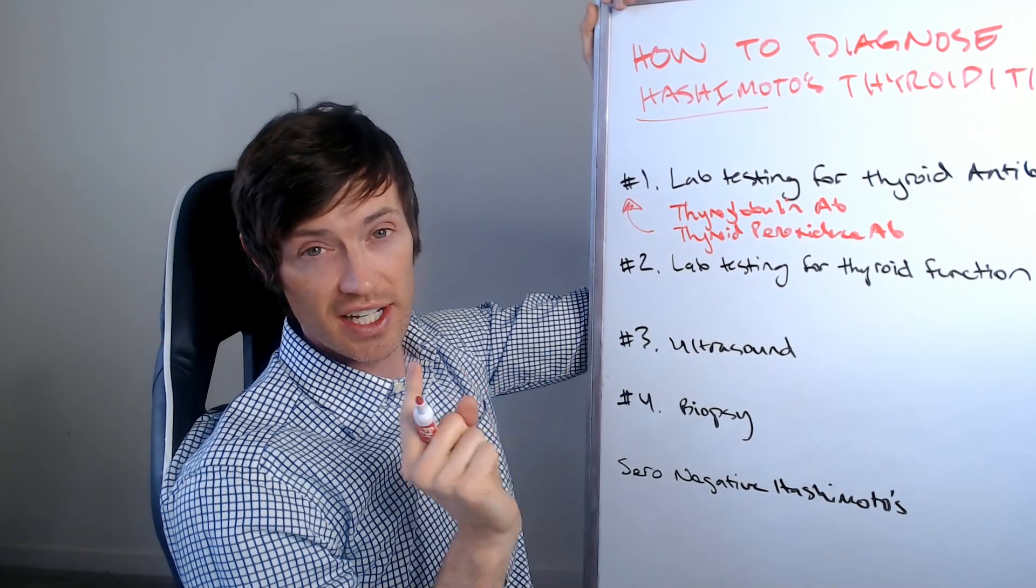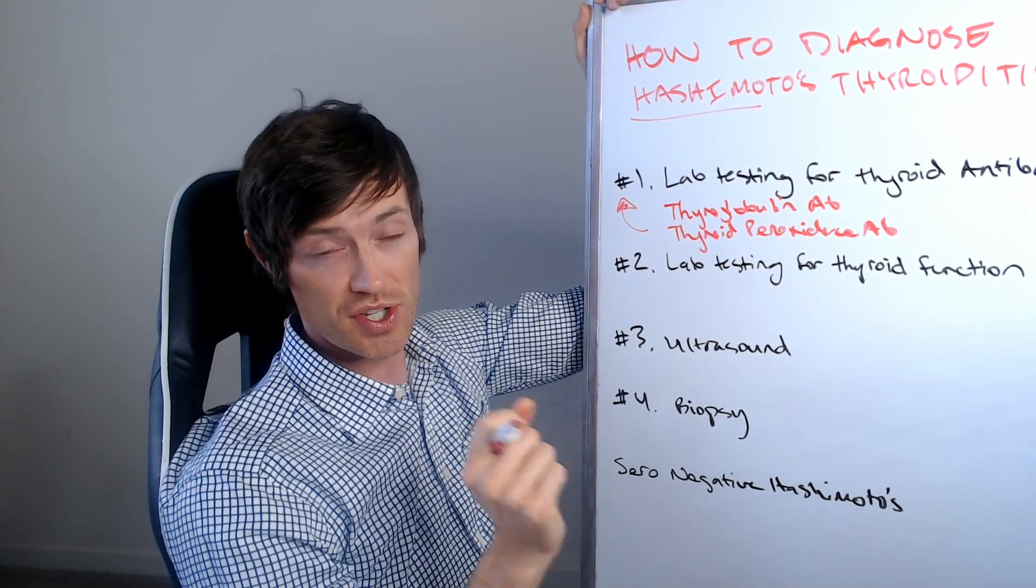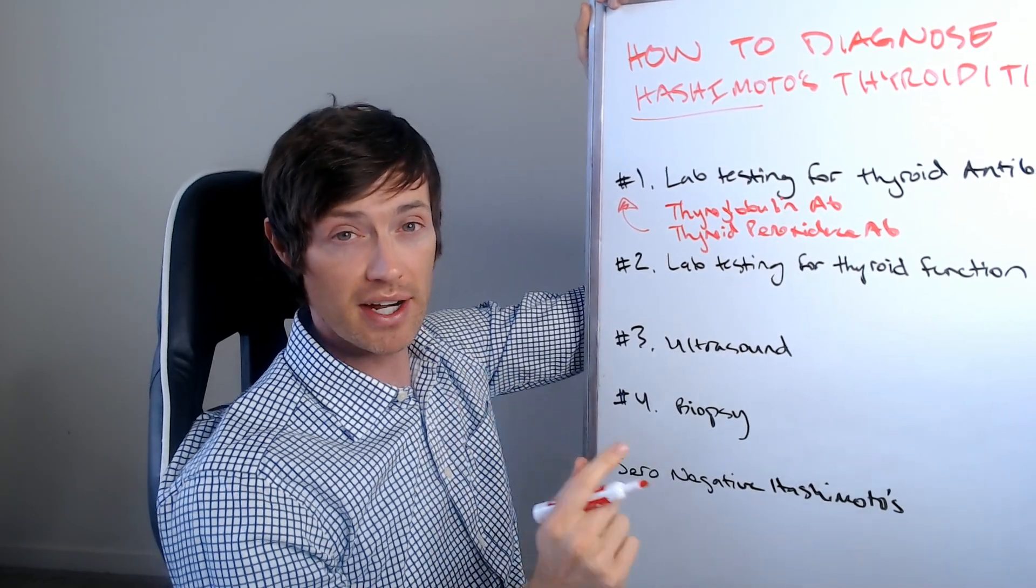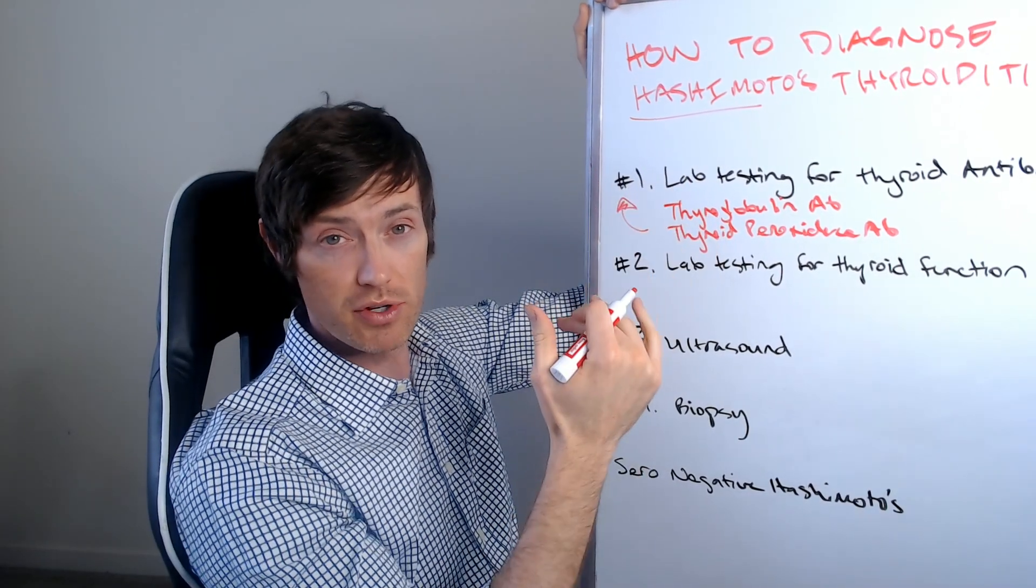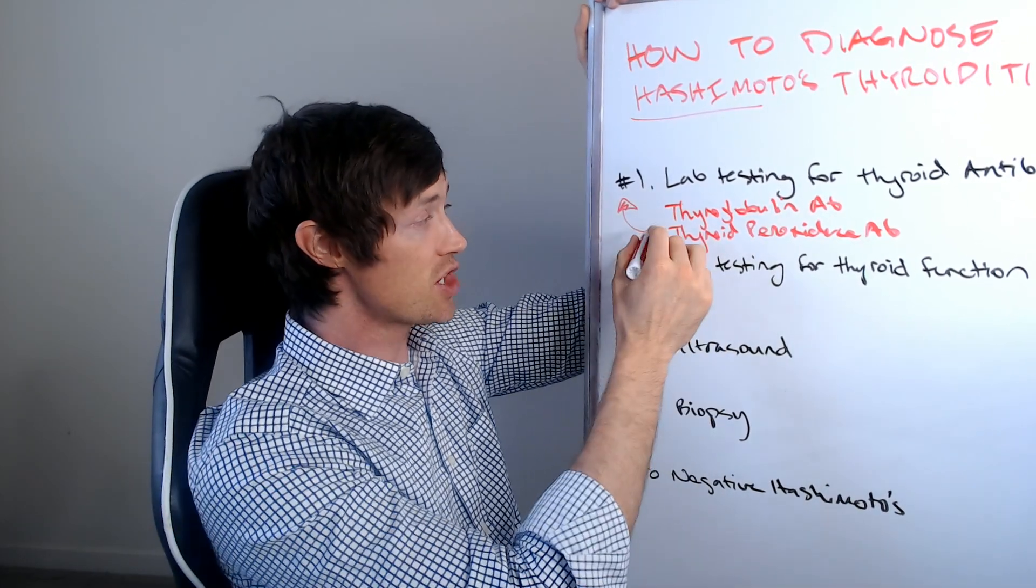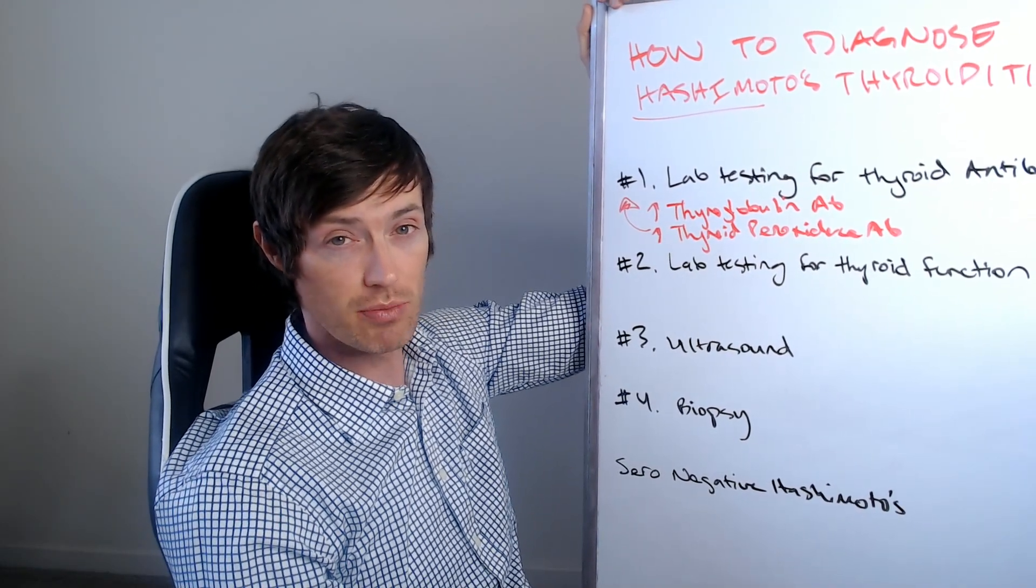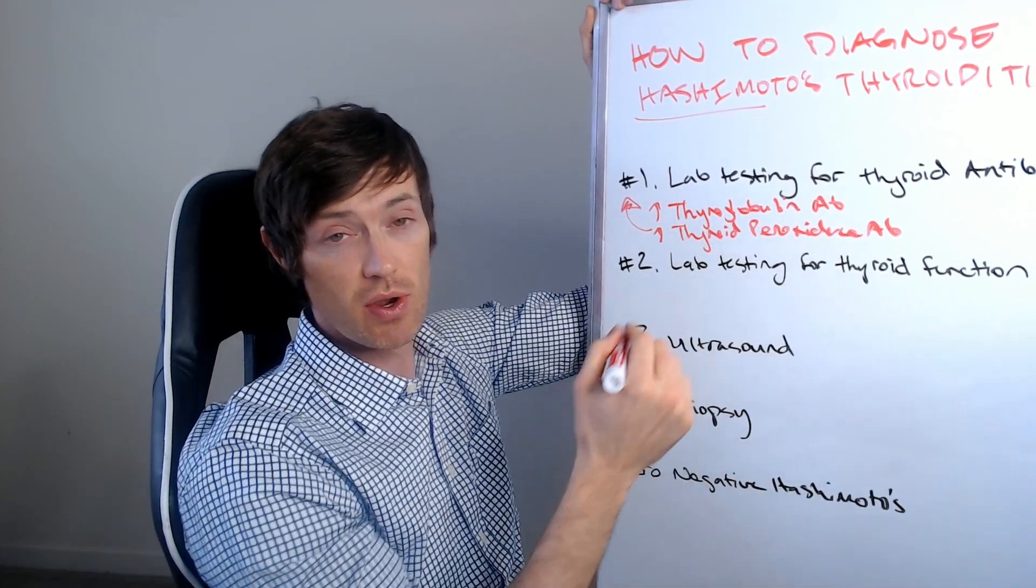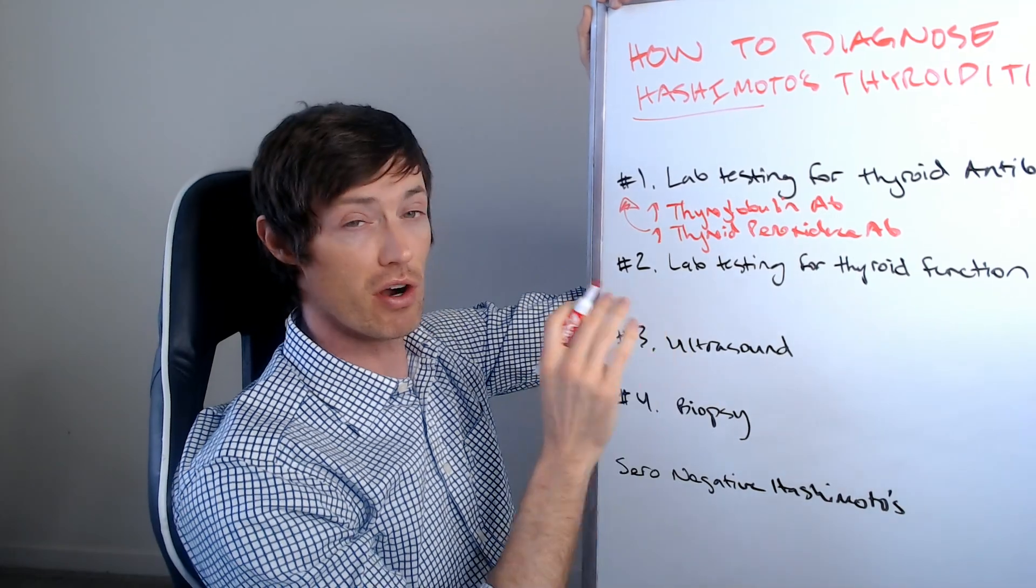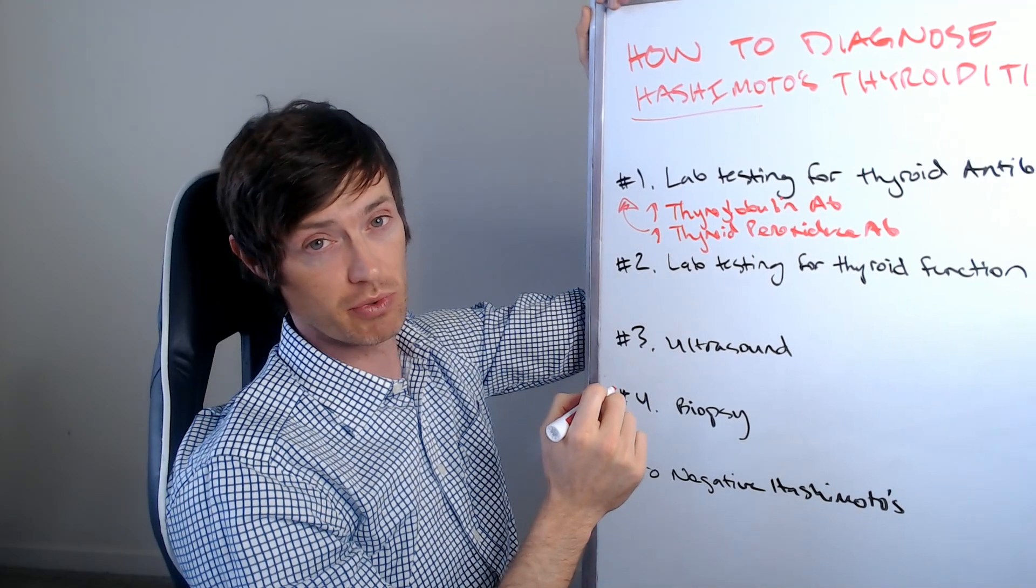Now notice I said a strong indication because it is not universally accepted that the presence of antibodies equals Hashimoto's thyroiditis in every single case. And I'll give you a very important example. During pregnancy, when the immune system is somewhat suppressed so that your body doesn't actually attack and kill the child that you're developing, you can actually have an elevation of these antibodies during pregnancy. And that doesn't mean you have Hashimoto's thyroiditis. It does mean that you have an increased risk for developing it and that you have an increased risk of developing postpartum thyroiditis, but there are states that occur where you can have elevated thyroid antibodies and not have Hashimoto's thyroiditis.